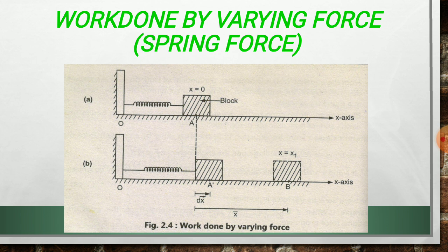Now today, we have to study work done by a varying force. Now figure shows the block of mass M and a spring of spring constant K. Now one end of spring is fixed to a vertical support, and the other end is tied to a block, where the block is placed on a smooth horizontal surface. Now when the spring is in its natural length, then the position of block is at x is equal to 0.